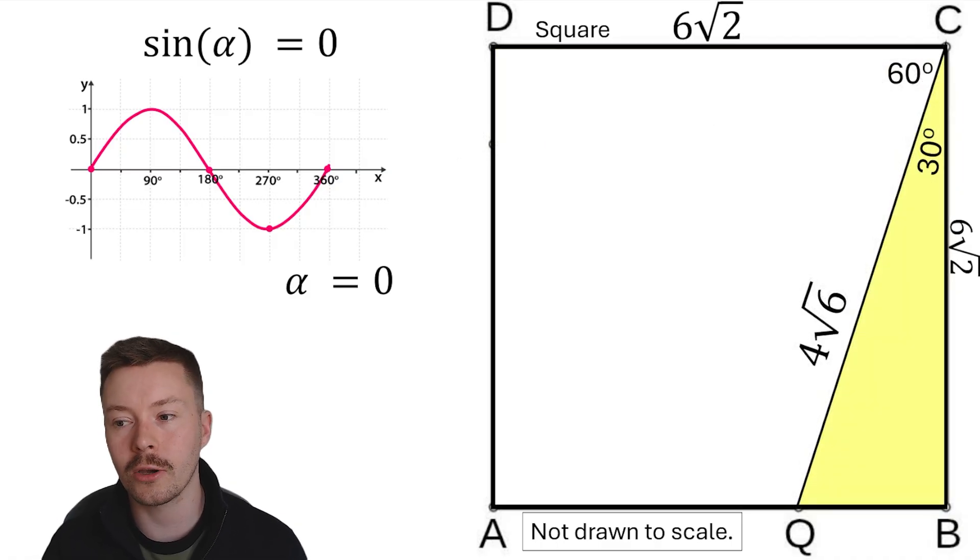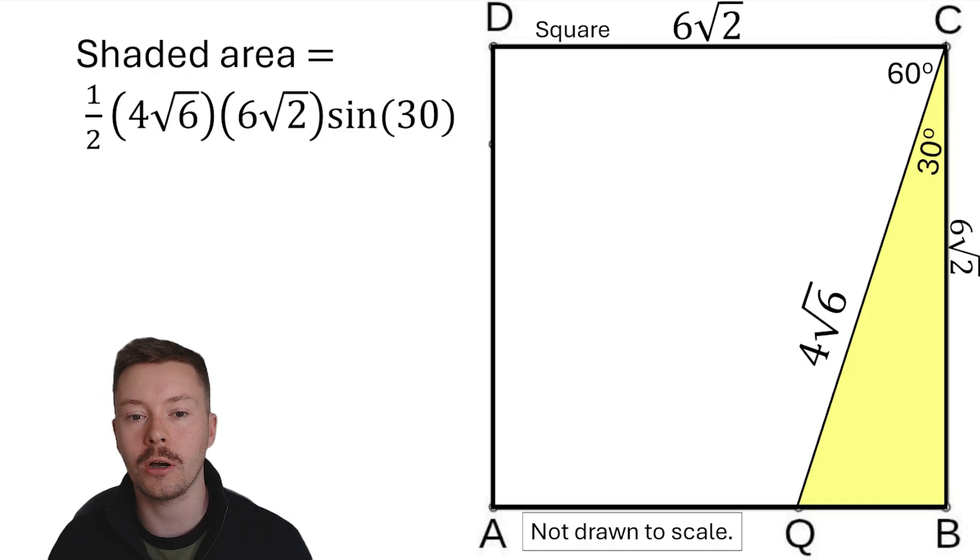X is 6 root 2, and we've then got the angle beta originally is 30, and so we can work out the area of that triangle, the shaded area, by doing a half times 4 root 6 times 6 root 2 times by sine 30, a half AB sine C.